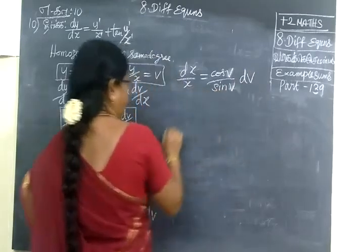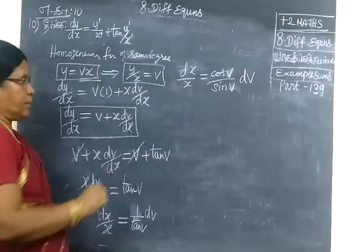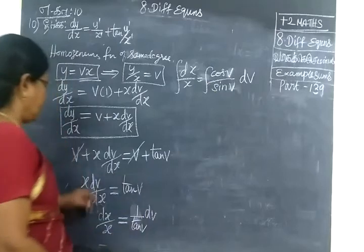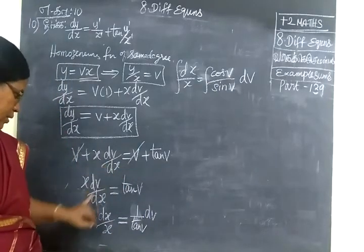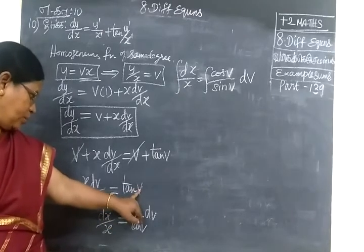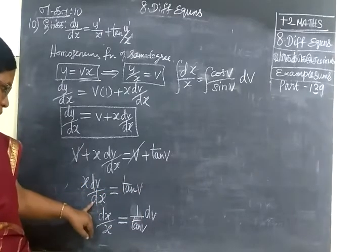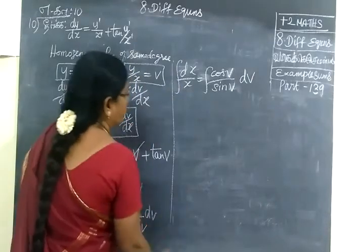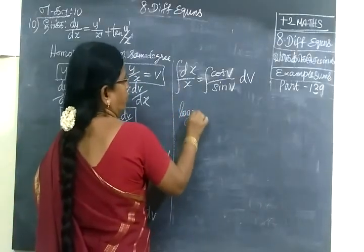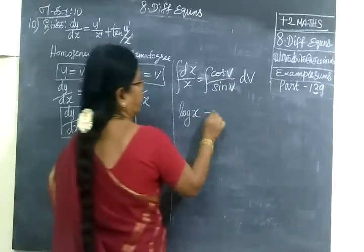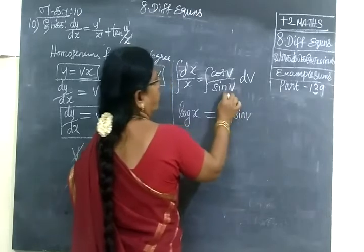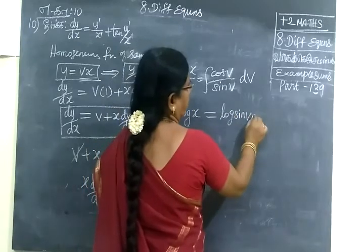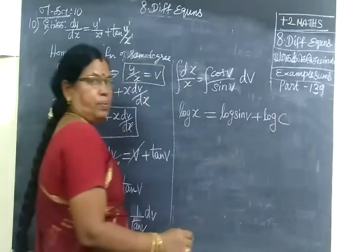Now integrating on both sides. log x equals to log sin v. Because sin v, the numerator is the derivative of the denominator. The numerator is log sin v. So, plus the arbitrary constant, c equals log c.